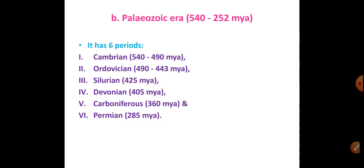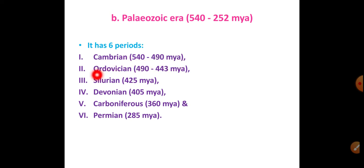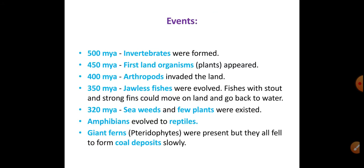The next era is the Paleozoic era, from 540 to 252 million years ago. This era includes 6 periods: Cambrian (540–490 MYA), Ordovician (490–443 MYA), Silurian (425 MYA), Devonian (405 MYA), Carboniferous (360 MYA), and Permian (285 MYA).